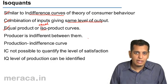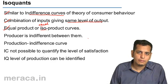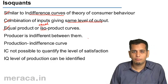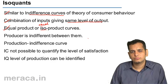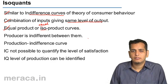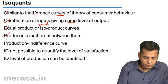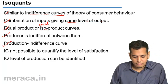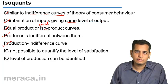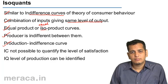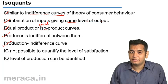It does not matter to him which combination he goes with. Combination A, B, C, D, and E all give him the same level of output, so he becomes indifferent in choosing any of the combinations. It is also called a production indifference curve, precisely because of this reason that the producer becomes indifferent.